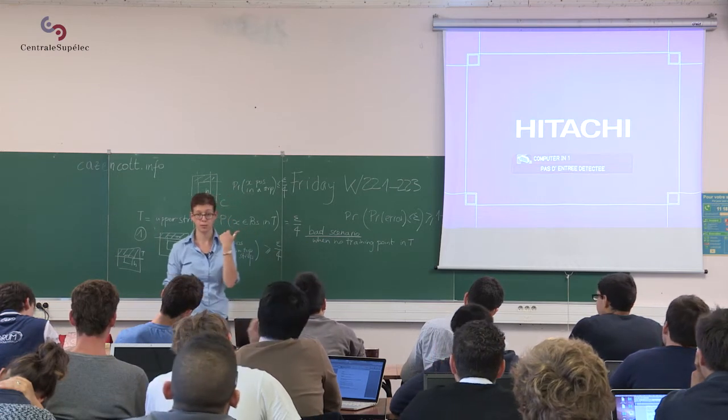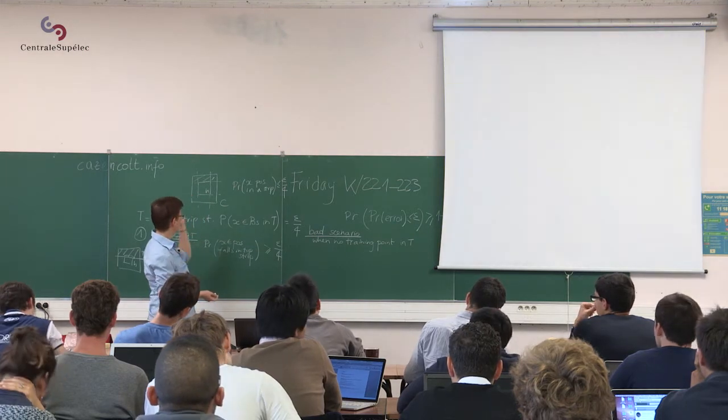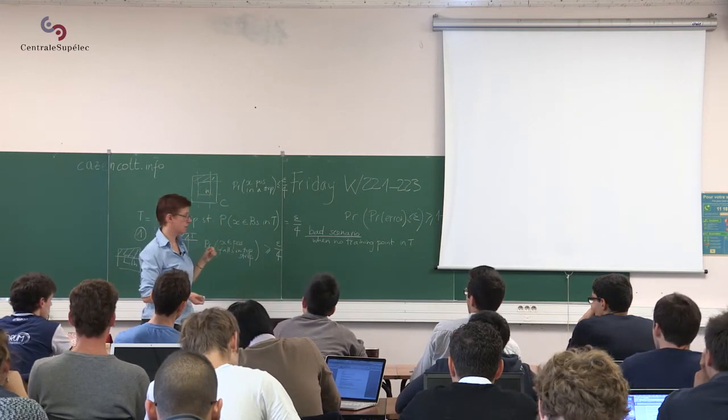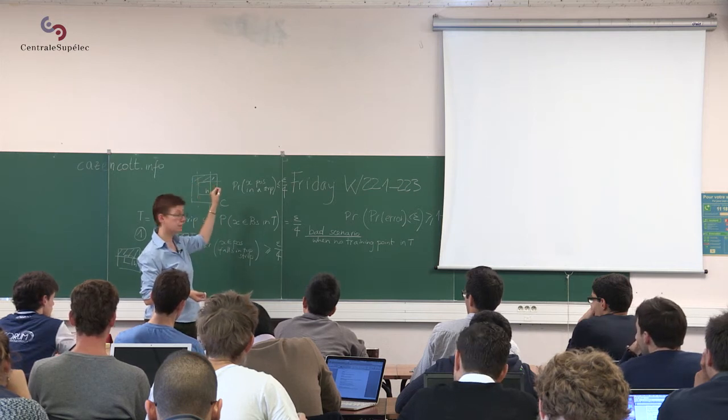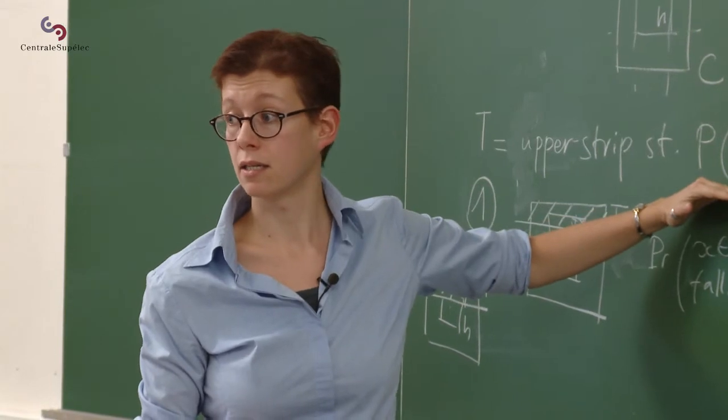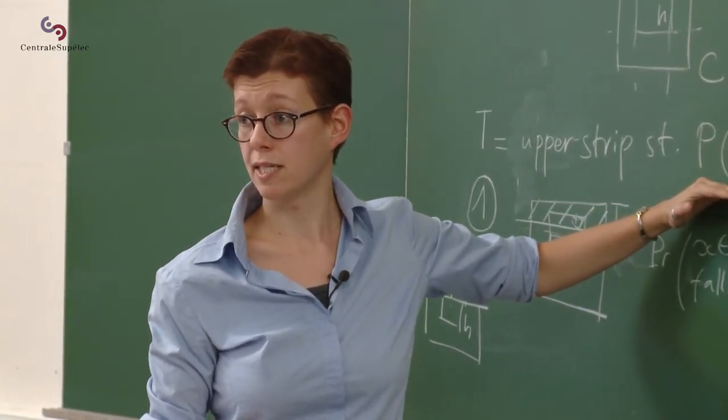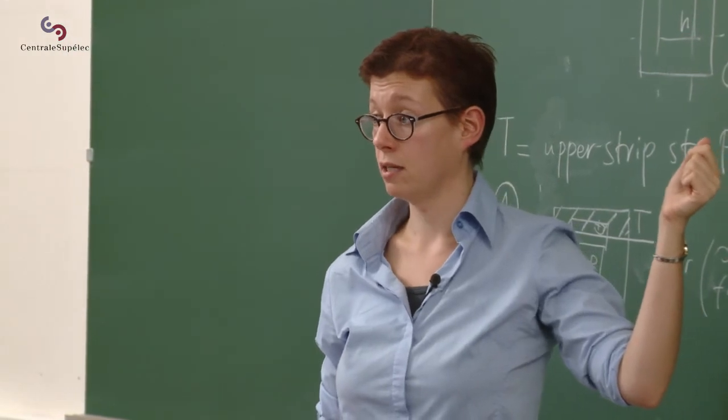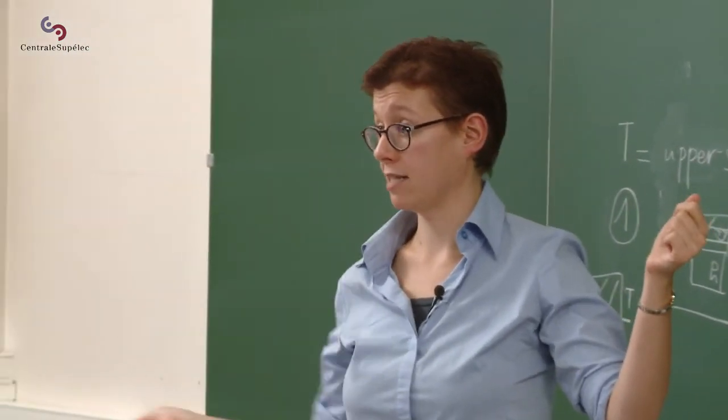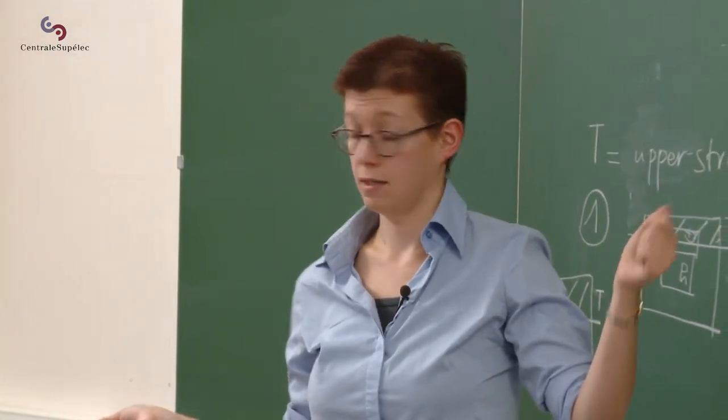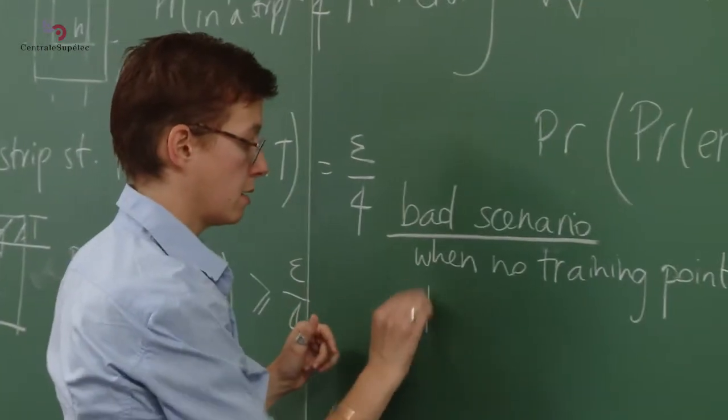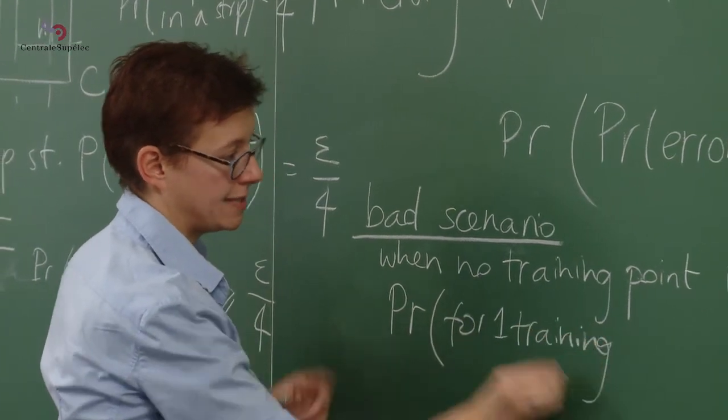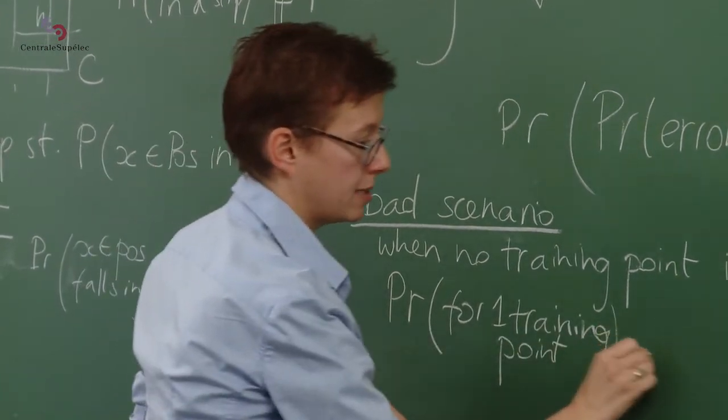So let's take one training point. So I take one point. It's positive, so it's inside C. The probability that this point is not in T is, by definition of T, 1 minus epsilon over 4. So T is defined as a strip such that the probability for an example to fall in that strip is epsilon over 4. So the probability for an example to fall outside that strip is 1 minus epsilon over 4.